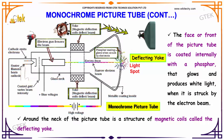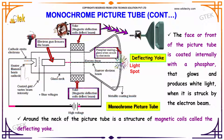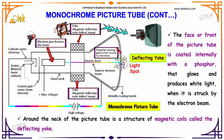The face or front of the picture tube is coated internally with a phosphor that glows and produces white light when it is struck by the electron beam.